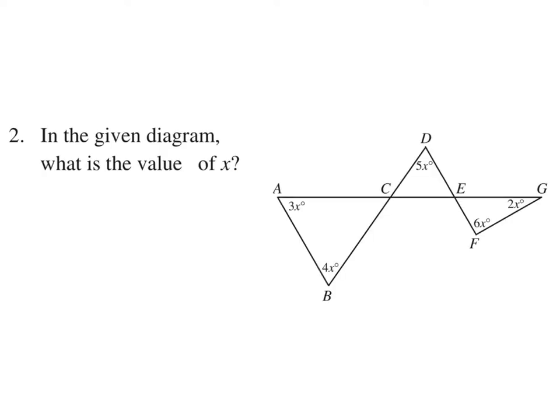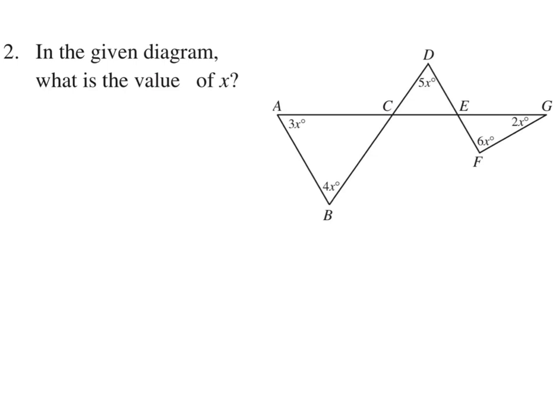In the diagram, what is the value of x? Let's first label a few things. This angle here will be 180 minus 7x, because the sum of the angles of any triangle adds up to 180. So this plus this plus this have to equal 180, therefore that is 180 minus 7x. Very similarly, that angle in there will be 180 minus 8x for the same reason.